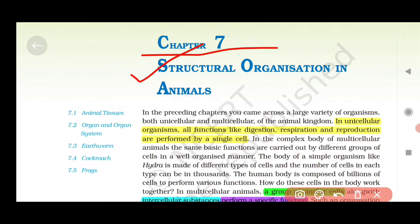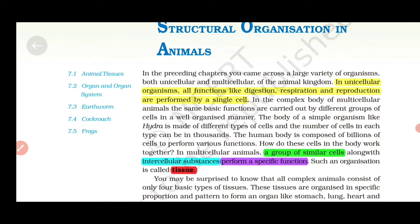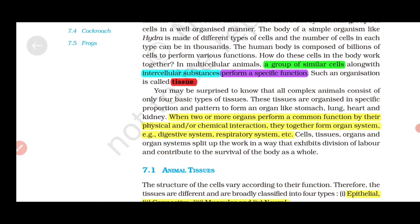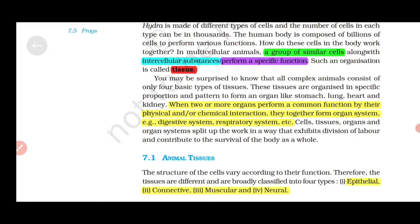Chapter 7: Structural Organization in Animals. In unicellular organisms, all functions like digestion, respiration, and reproduction are performed by a single cell. A group of similar cells and intercellular substances that perform a specific function is called tissue.